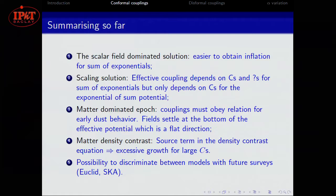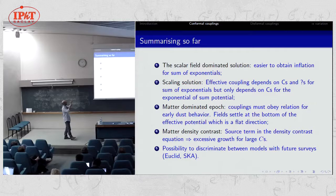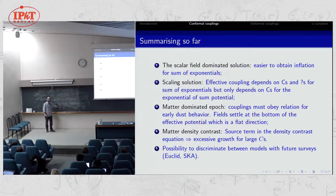In the future, error bars from SKA and Euclid can be sufficiently small to separate these models from ΛCDM. This comes from the paper with Alex Lazkoz, Karim Malik, and David Mota. In summary: scalar field-dominated solutions are easy to obtain for some exponential potentials; scaling solutions have effective couplings that are very large; for the matter-dominated epoch, the couplings must obey a relation for early dust behavior, where the field settles at the flat direction of the effective potential; and the matter density contrast depends on the size of the couplings — if very large, it leads to instabilities.